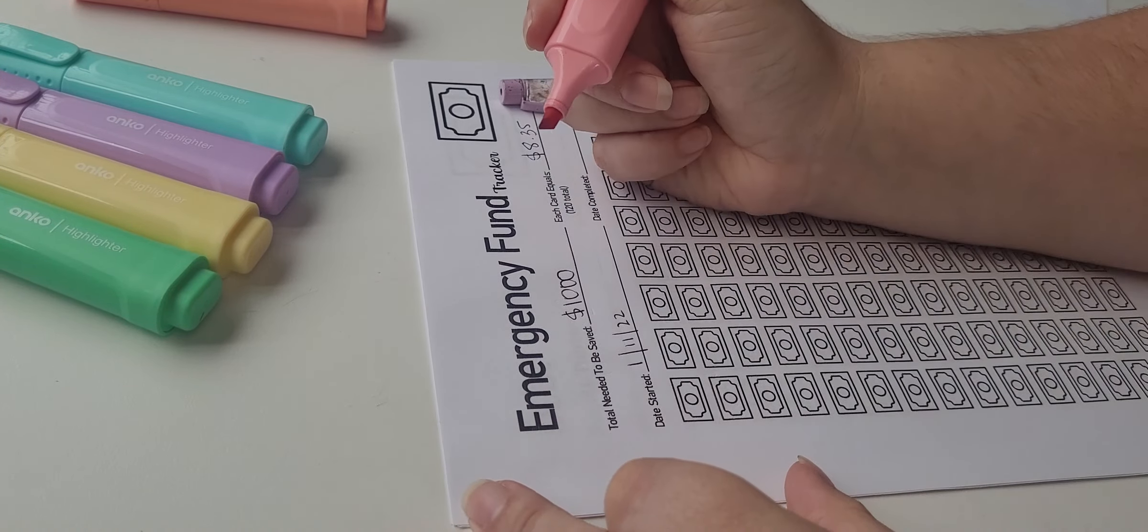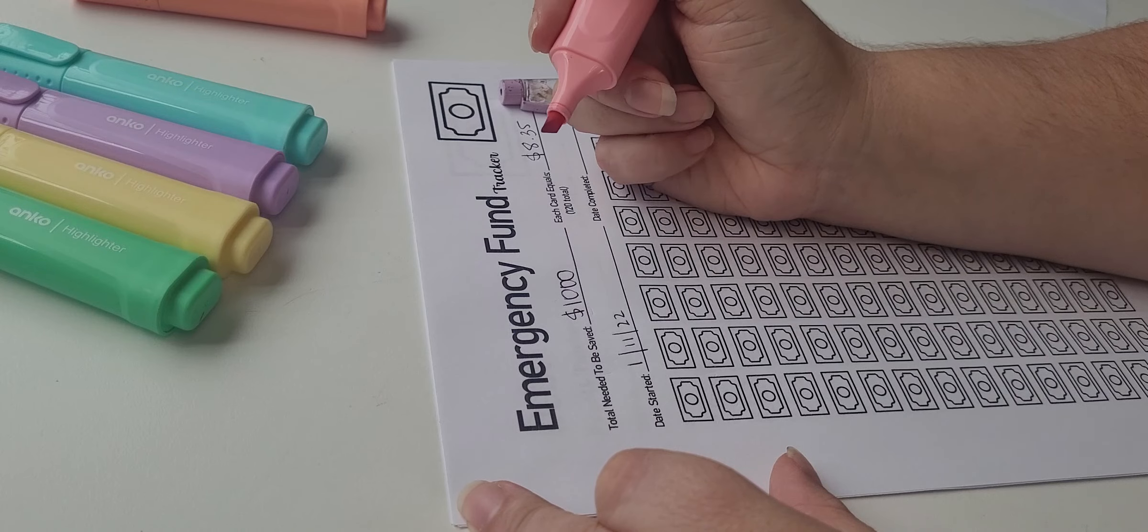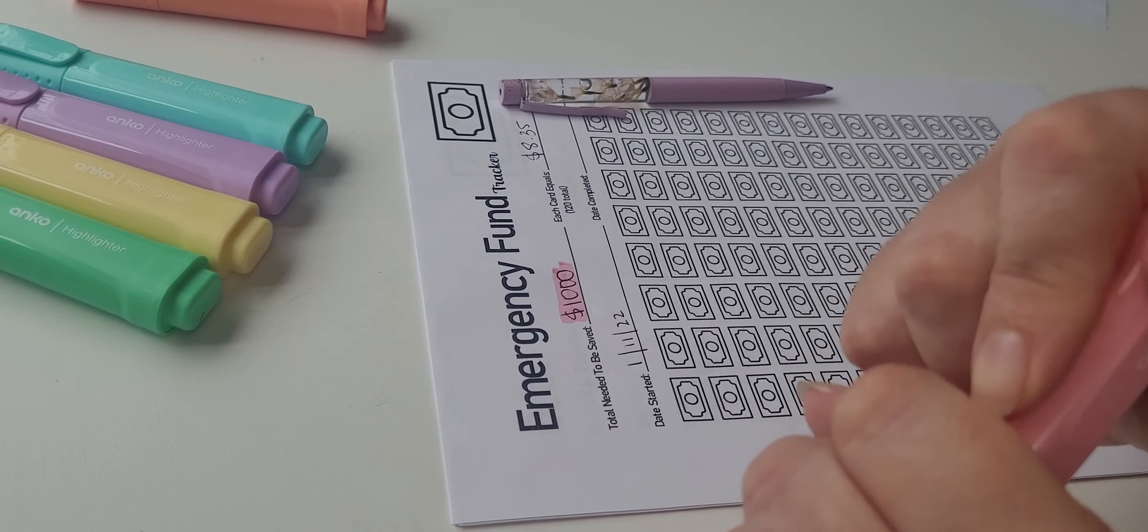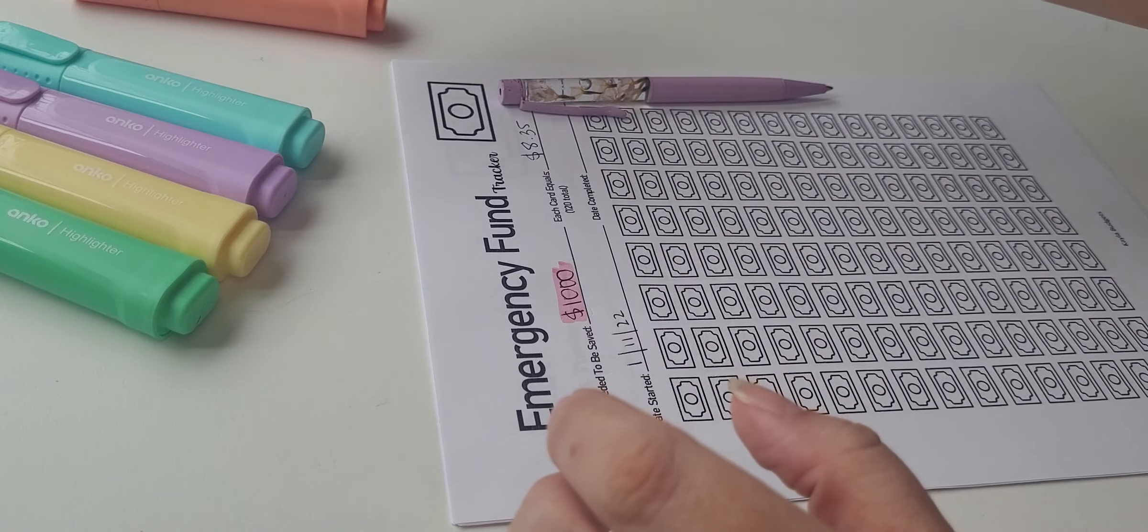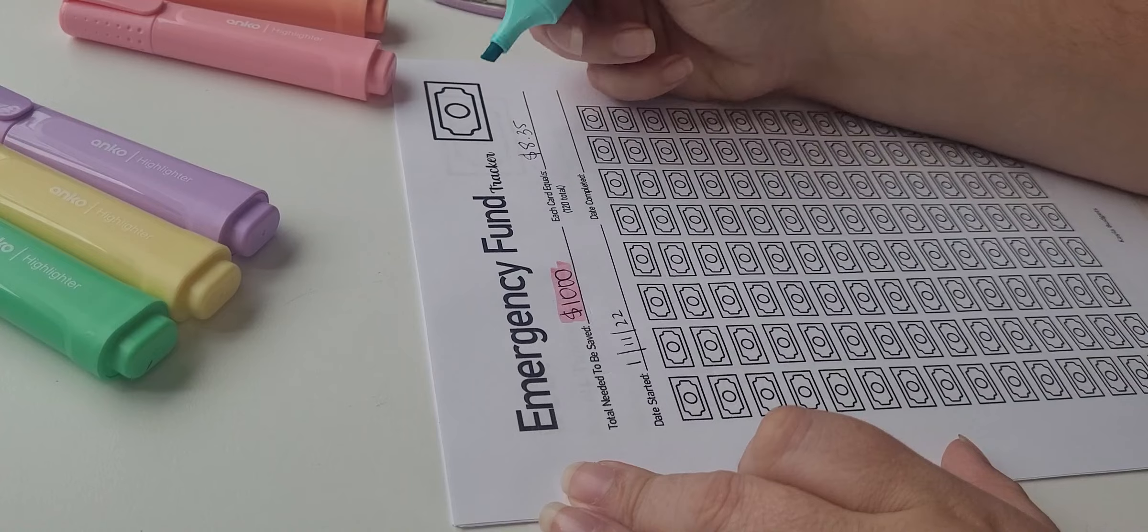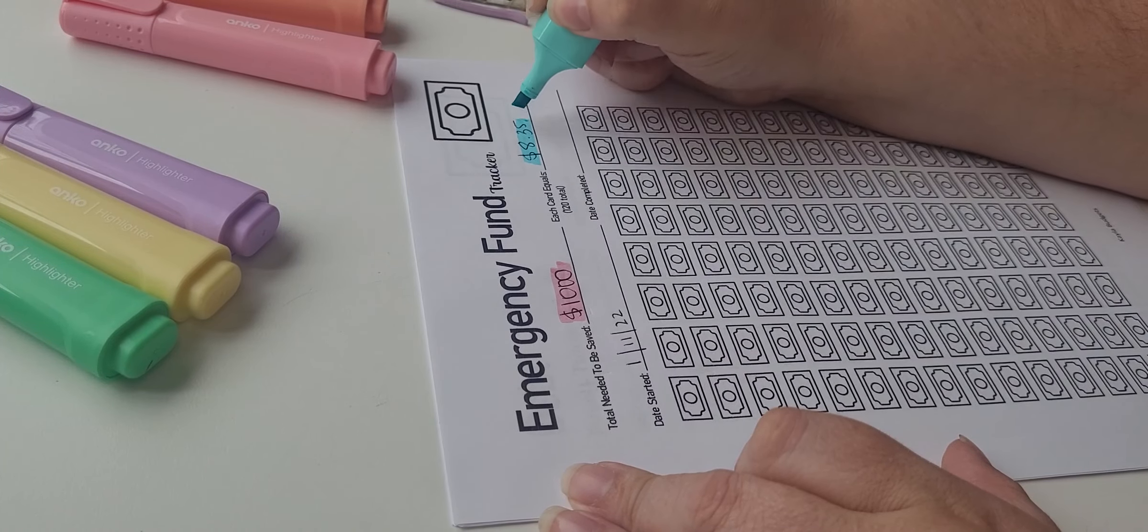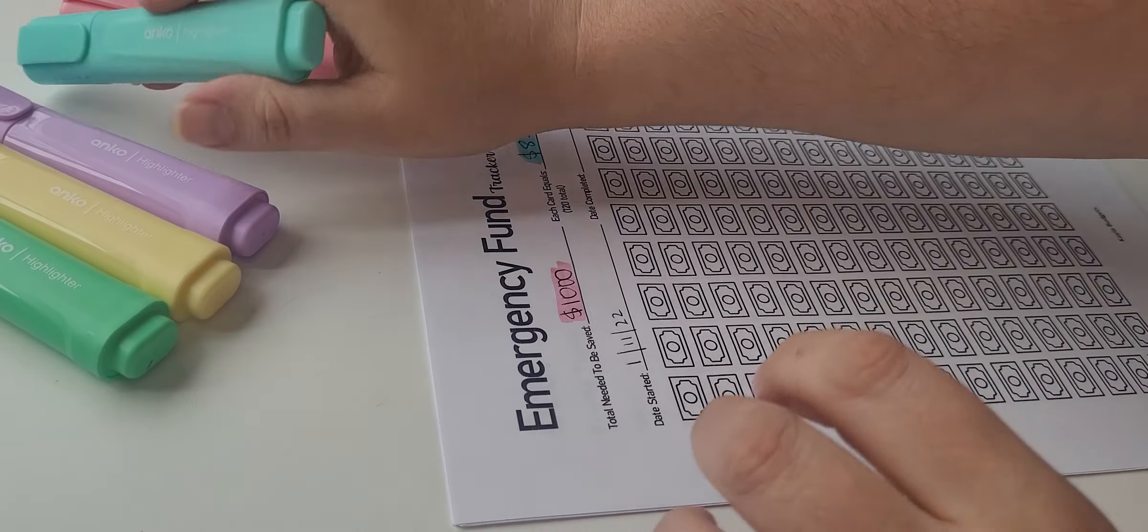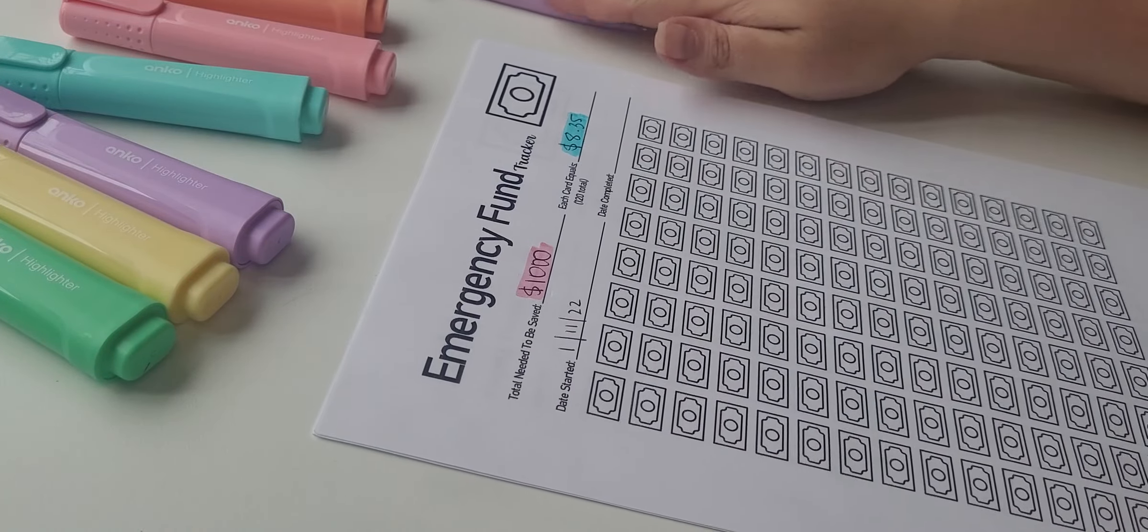So every time I put $8.35 into a emergency fund, I can color it in. So date started is the first, the 11th, I only see first, $22. And that's how that one's going to go. And I'm going to put some color in it because I want to. So I'm going to color in this and I'm going to color in the amount just to make it colorful. And then I'll color in these. Anyway, that's the emergency fund. That's what our first focus is on. And then we'll move to all the debts.